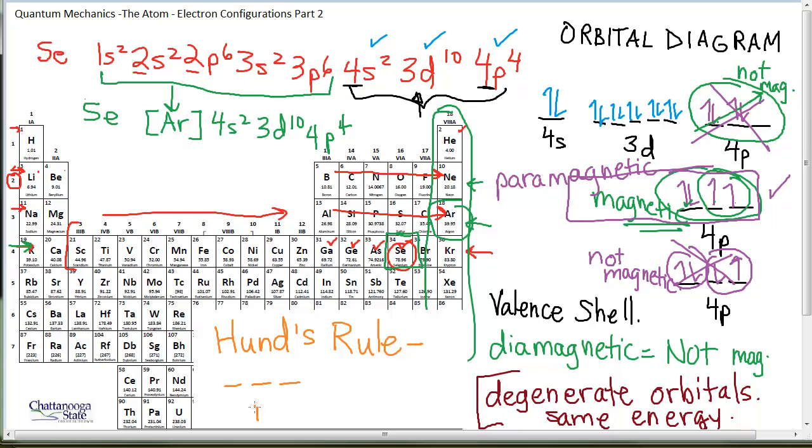And notice that they would always fill in spinning in the same direction until they had to pair up. So if I've got any generic p subshell, the electrons will fill into the first orbital spinning in one direction. It doesn't matter if I draw up or down. A second one would fill into a second orbital. A third one would fill into a third orbital. And then if I have a fourth electron, then they have to start pairing back up. If I have a fifth electron, they have to pair back up as well. If I have a sixth, it would finally finish filling up that orbital.